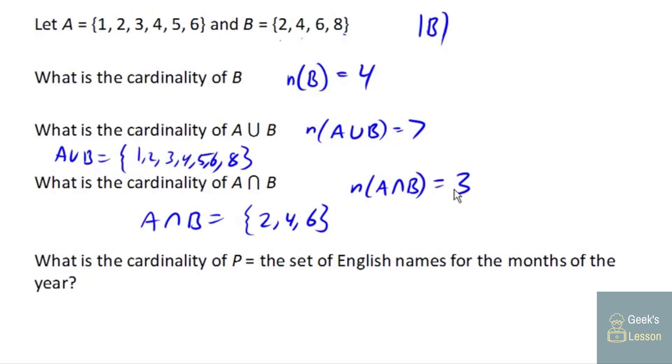So last question here is unrelated to those sets. It says, what is the cardinality of set P, which is the set of English names for the months of the year? So as you probably know, there are 12 months in the year. So the number of month names, or actually I guess I should say, the number of elements in set P is 12. There are 12 names for the months of the year.